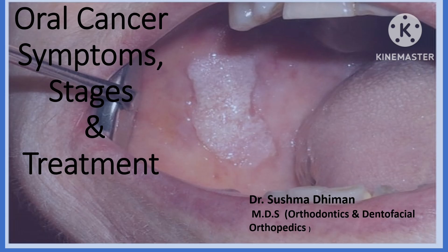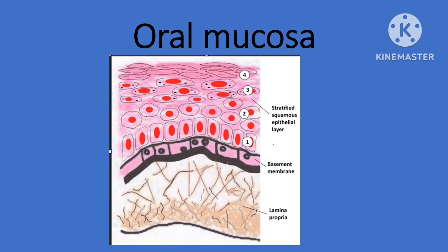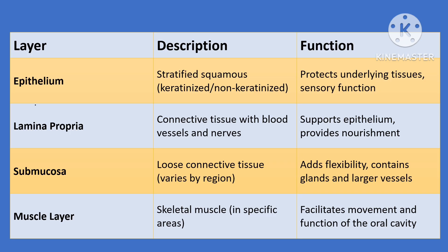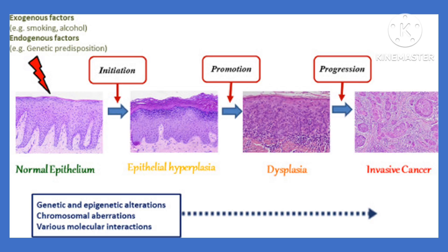Let's get started. First we will discuss briefly what the oral mucosa is, because this is the area where squamous cell carcinoma begins. The oral mucosa is a protective lining inside the mouth composed of three layers: the epithelium, the basement membrane, and the lamina propria. Oral squamous cell carcinoma typically arises from the squamous cells in the epithelial layer. Non-keratinized areas are more prone to carcinogens and thus more prone to the development of oral squamous cell carcinoma.